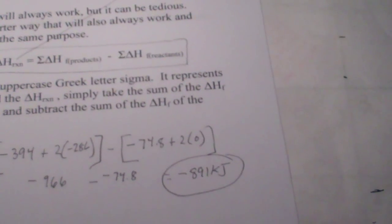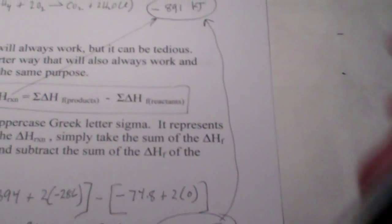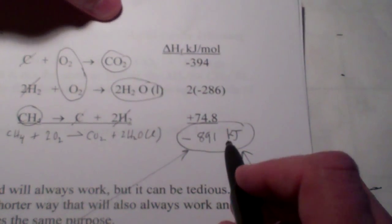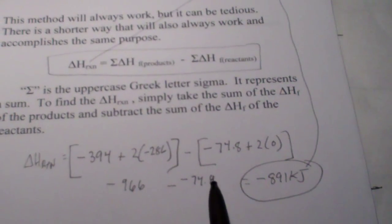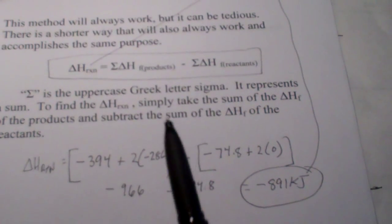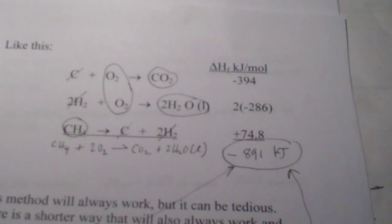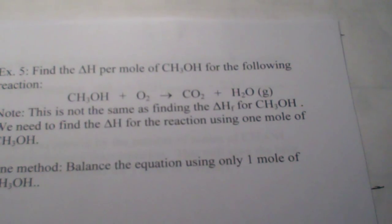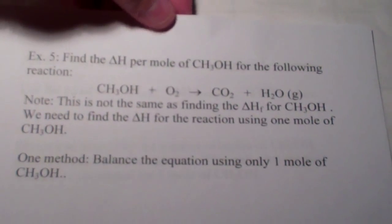This version of Hess's Law gives us the same answer as the longer, drawn-out, tedious version. This is the version we will use commonly, unless I ask you to do it the formal way. Let's try another one — example 5 from your notes. Pause this video and try it on your own, then unpause and see how I do it and how close you are. You might surprise yourself.